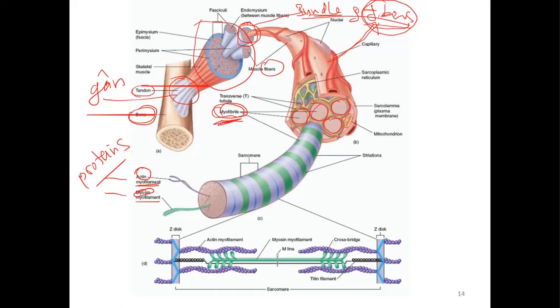Here we zoom in the sarcomere. Each sarcomere is actually divided by two Z-lines - you can see this here and here. The length between two Z-lines is called one sarcomere.